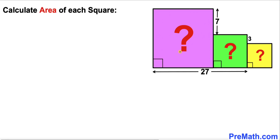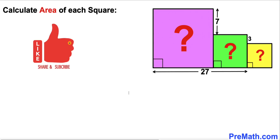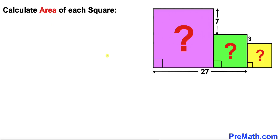Welcome to pre-math. In this video we have got three squares as you can see in this diagram, such that the distance between the purple square and the green square is 27 units. Moreover, this vertical distance is 7 and this is 3 units. We are going to calculate the area of all three squares. Please don't forget to give a thumbs up and subscribe.